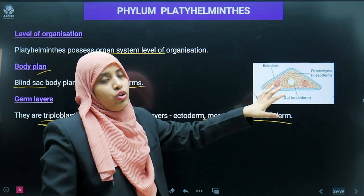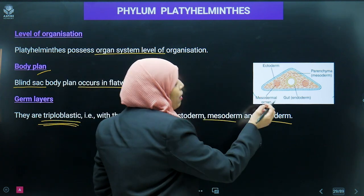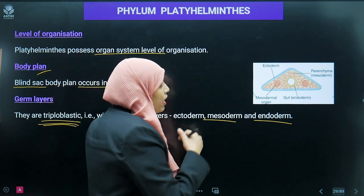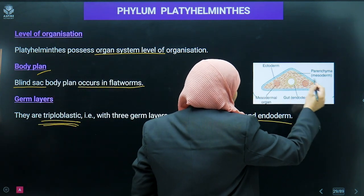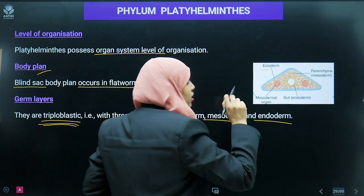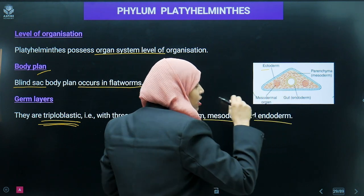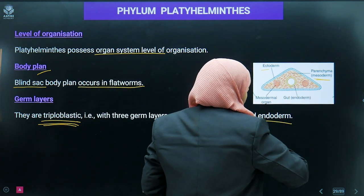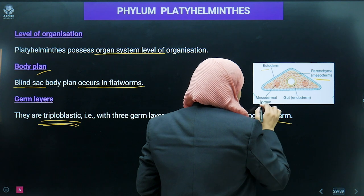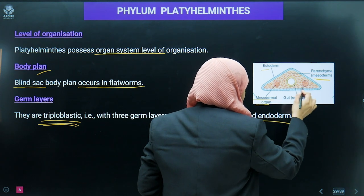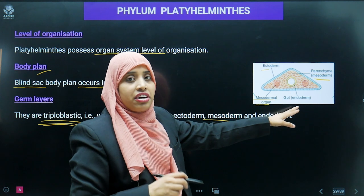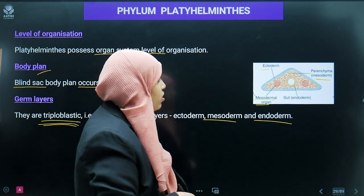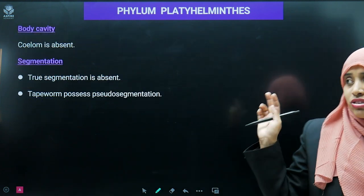If we look at a cross-section of platyhelminthes under microscopic view: the outermost layer is ectoderm, inside that is a fluid-like region made up of parenchyma which is the mesoderm, mesodermal organs are also present, and then the gut — the digestive tract region — is known as endoderm. So three germinal layers are visible.